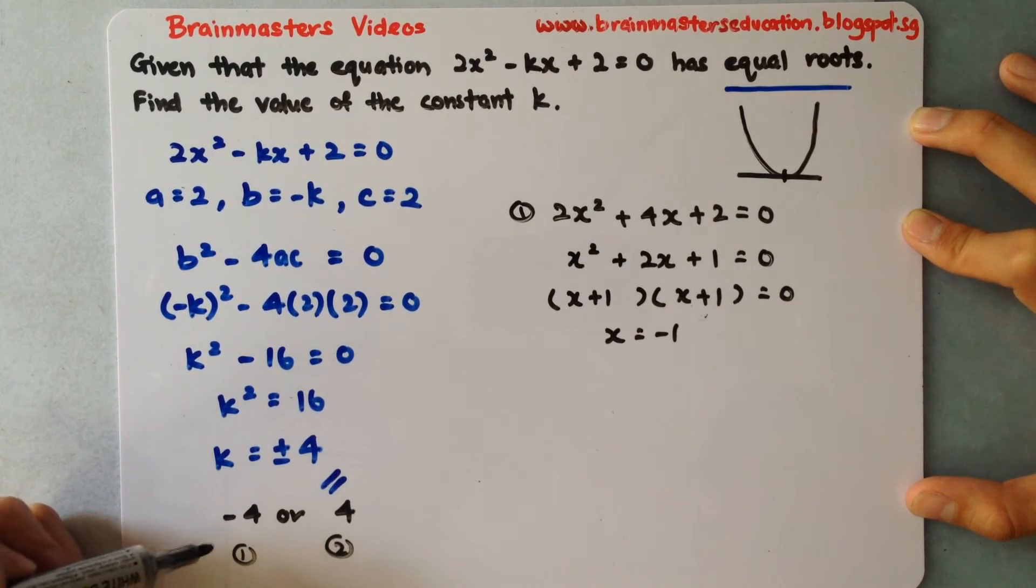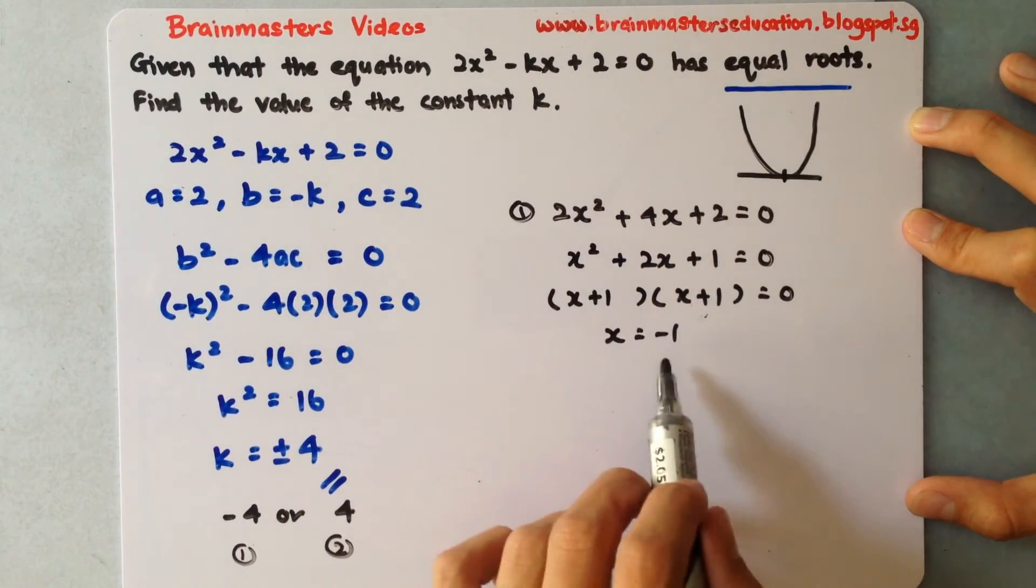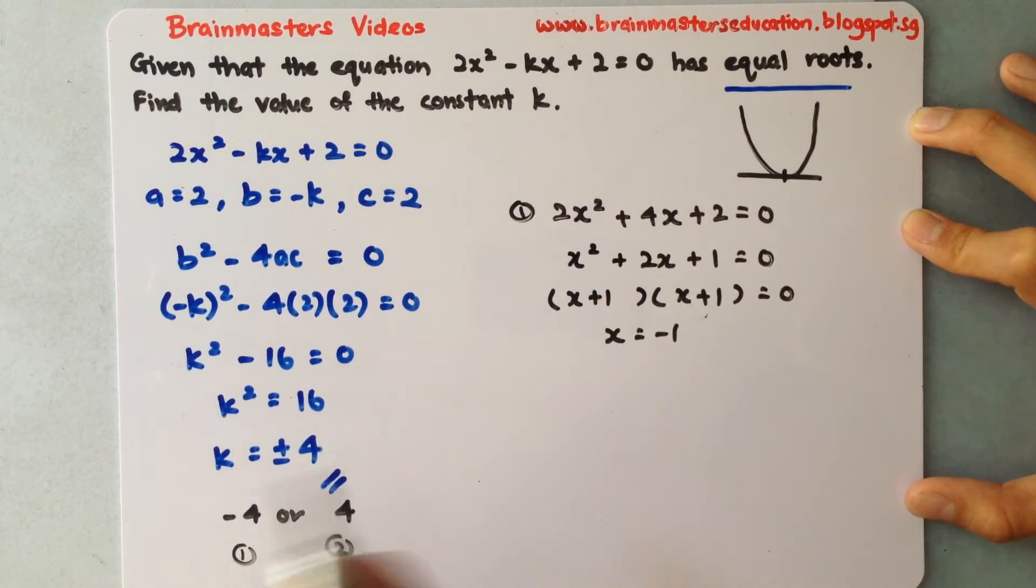So that means this is valid. When I put my k as negative 4 inside the equation and solve, I only have one point, which is true because they are equal roots. How about the other one?